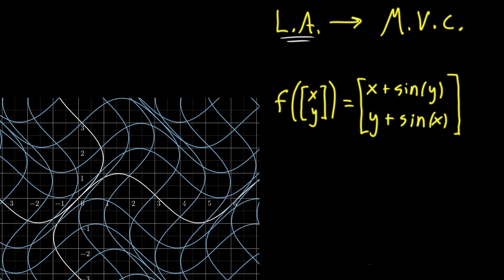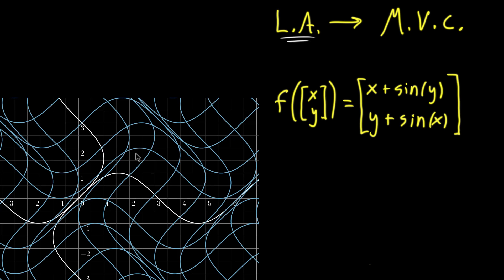All right, so things get really wavy, really curly. This is not at all a linear transformation. All of the lines don't remain lines. They're no longer nice grid lines that are parallel and evenly spaced.